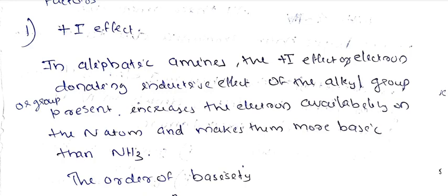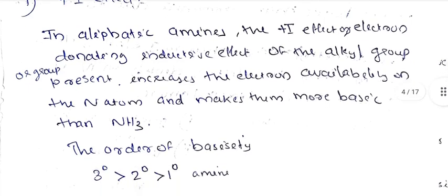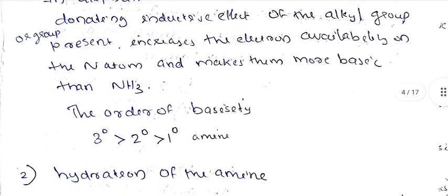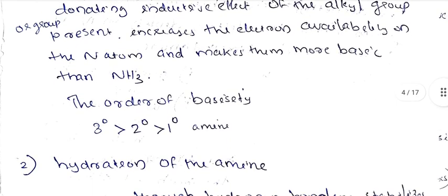The +I effect increases basicity. So the order of basicity based on the +I effect is: tertiary amine, then secondary, then primary. Tertiary amine — in its structure, three R groups (R, R', R double dash) are attached to the nitrogen.